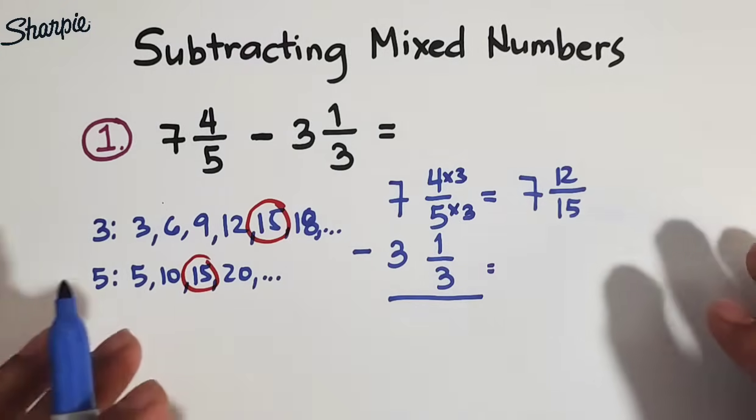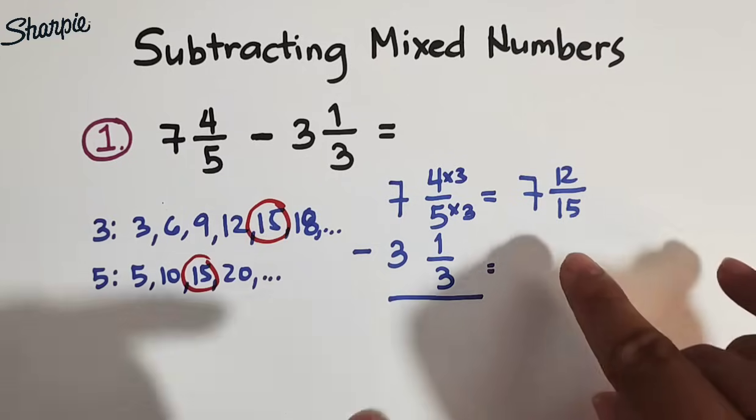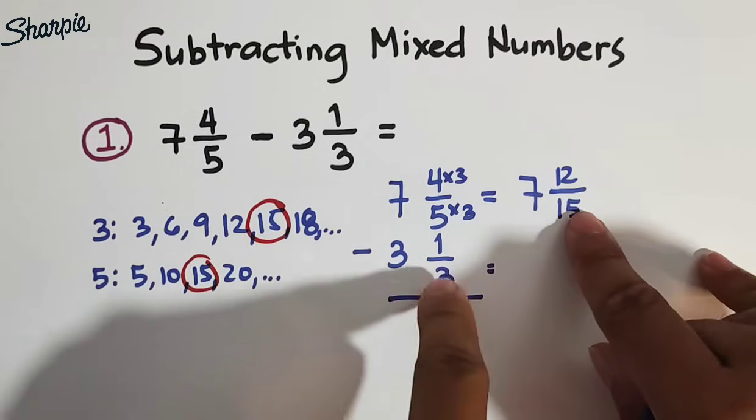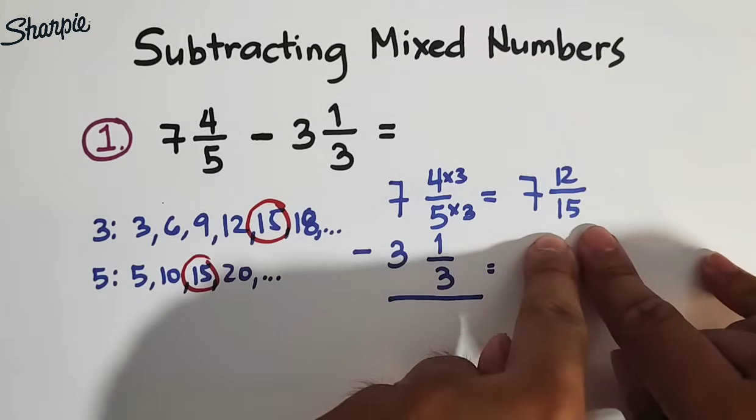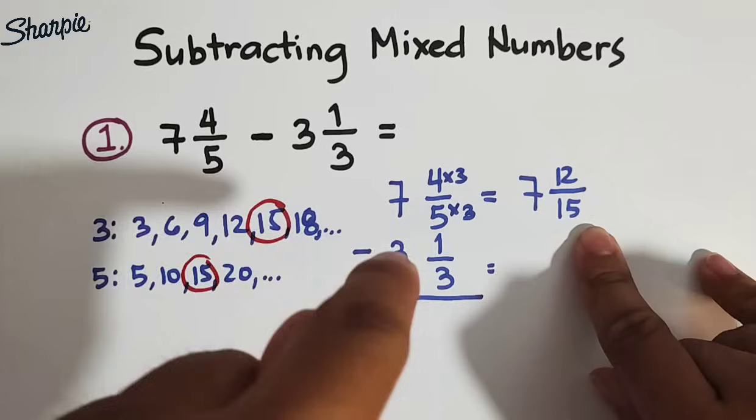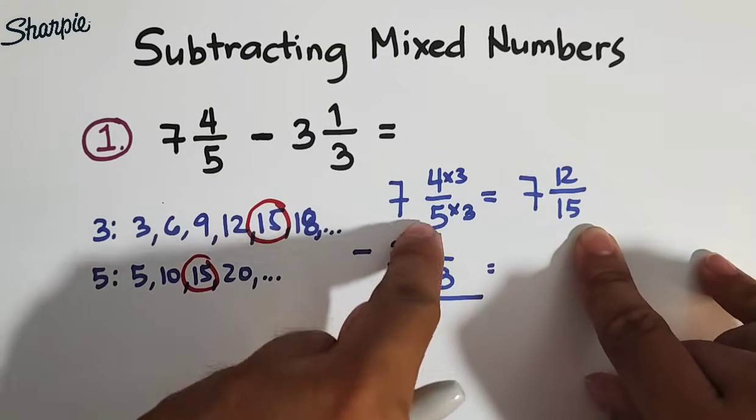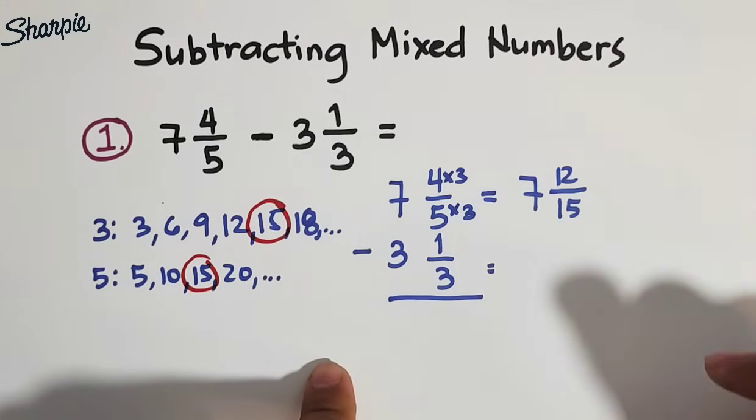Don't worry guys, if manonotis nyo, magkaiba sila, still, 7 and 12 over 15 is still equivalent to 7 and 4 over 5. Hinanap lang natin yung kanilang least common denominator.